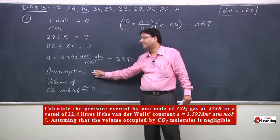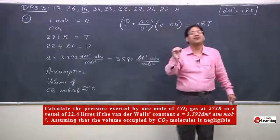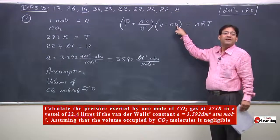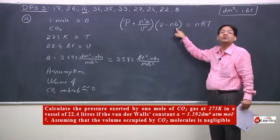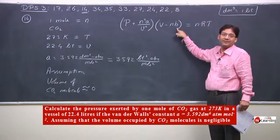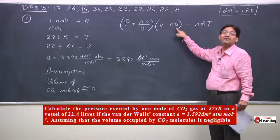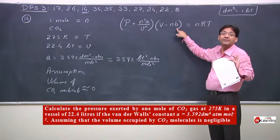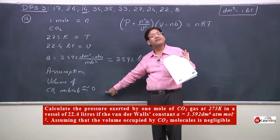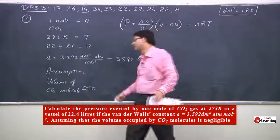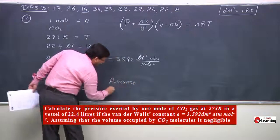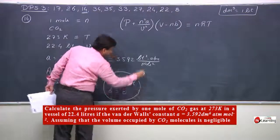The assumption given in the problem is that the volume of CO2 molecule is zero. This means that B, which is the volume correction due to the finite volume of gas molecules, will have a finite value normally. But as stated in the problem, we assume the volume of carbon dioxide molecule to be zero — so we assume B = 0 for carbon dioxide.